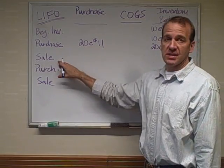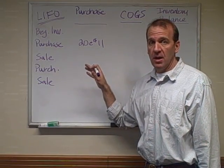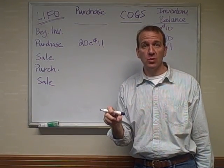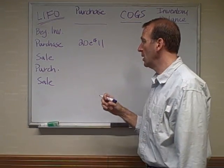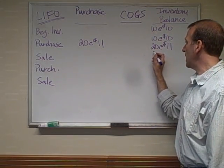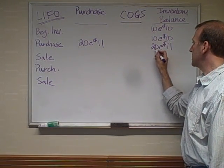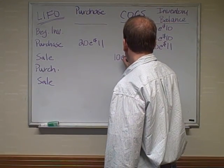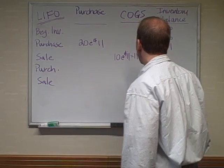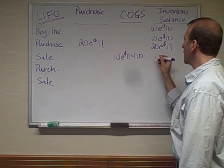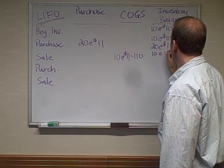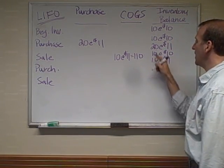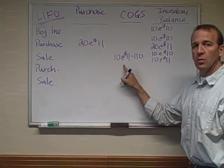Then we had our first sale — we sold 10 of these items. Remember, we're not concerned about the sales calculation; we're concerned about the cost of goods sold and inventory part of the journal entry. So for last in first out, when we sell 10, it's 10 of these $11 ones — 10 at $11, which would be $110 for our cost of goods sold. So what do we have left? We have 10 at $10 and 10 at $11, because 10 of the $11 ones we sold.